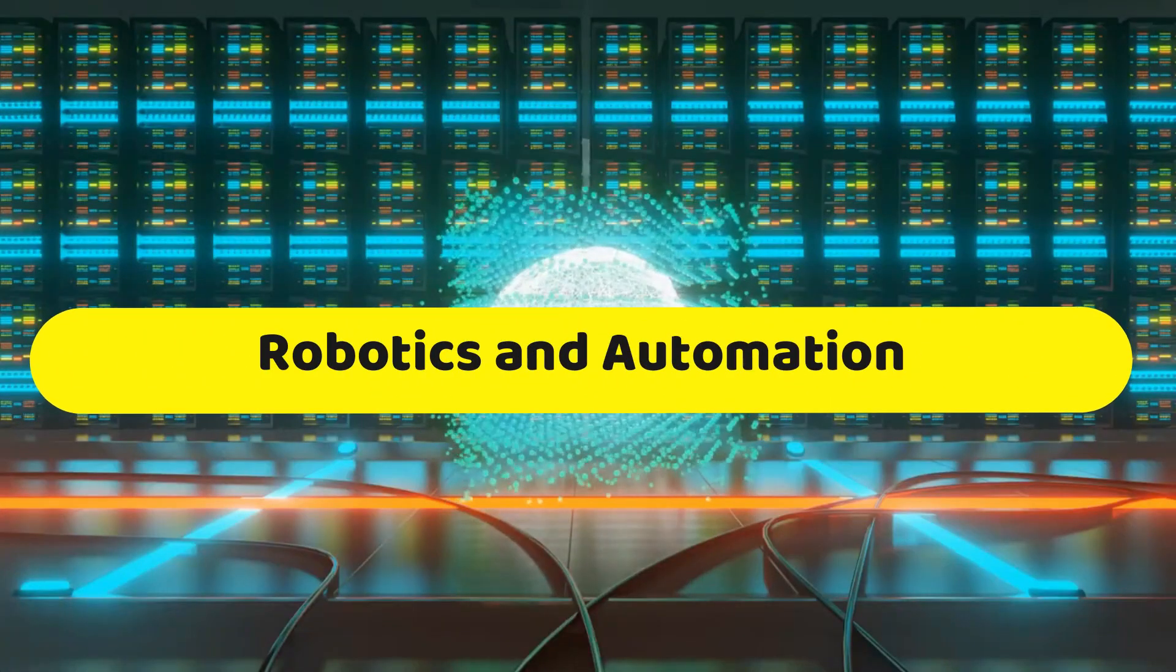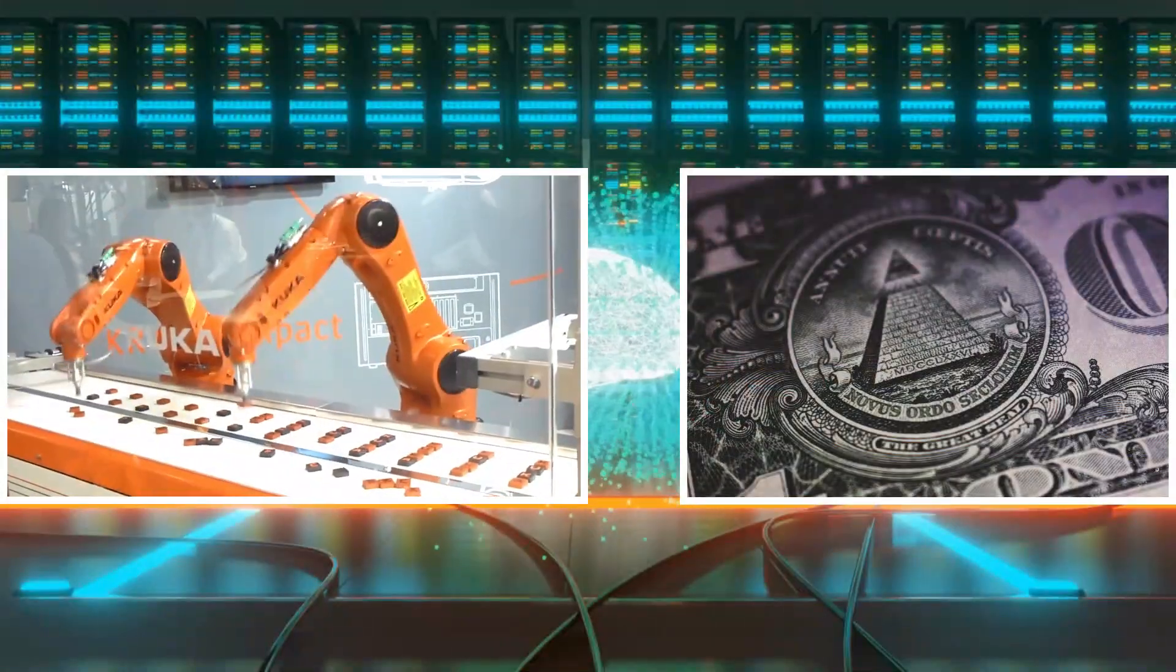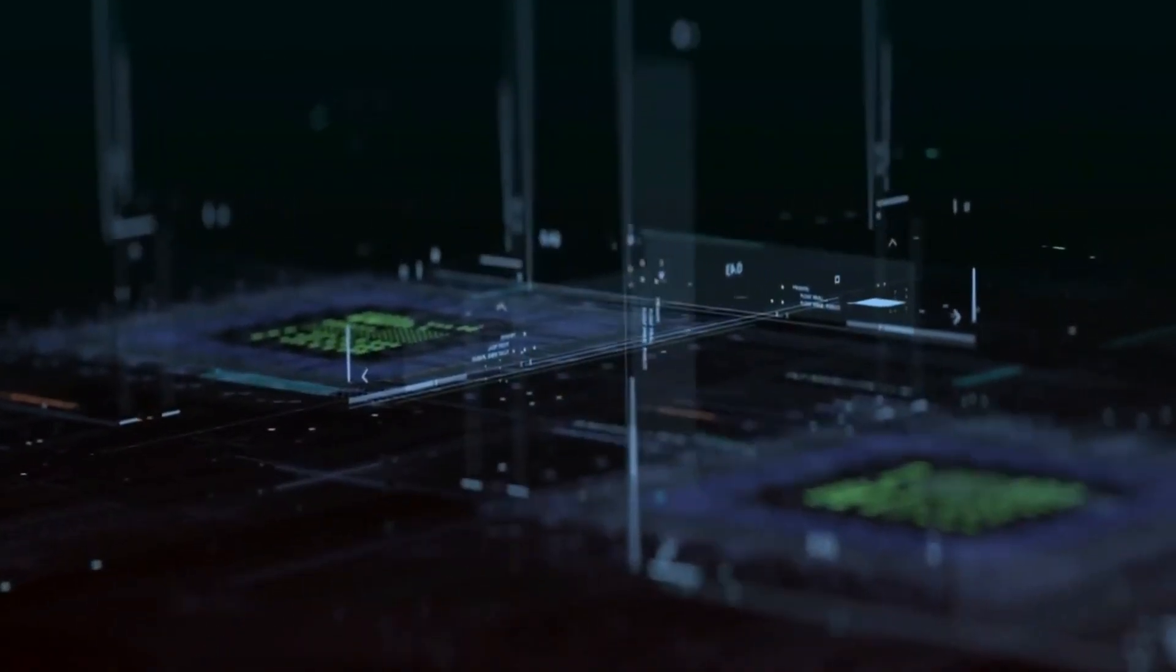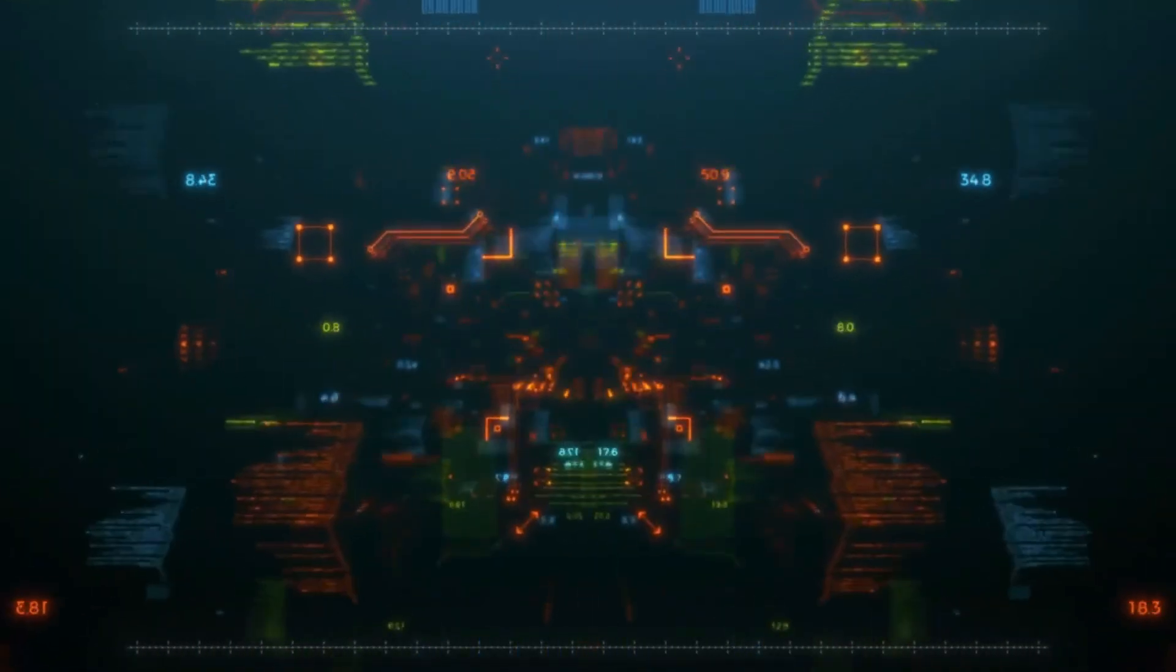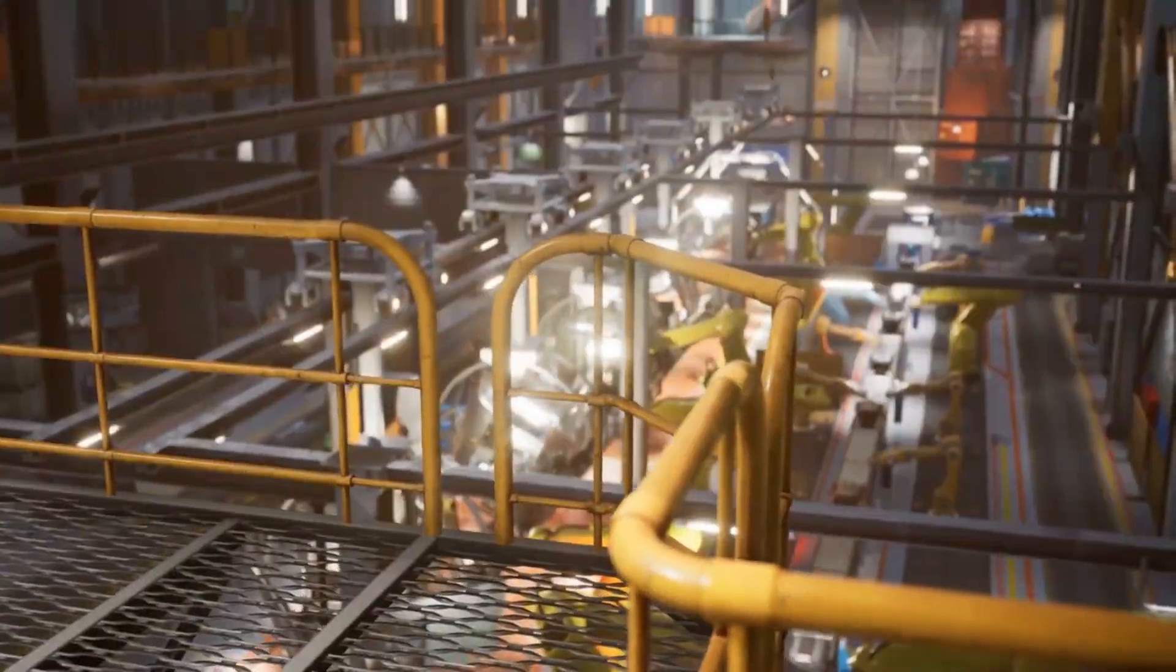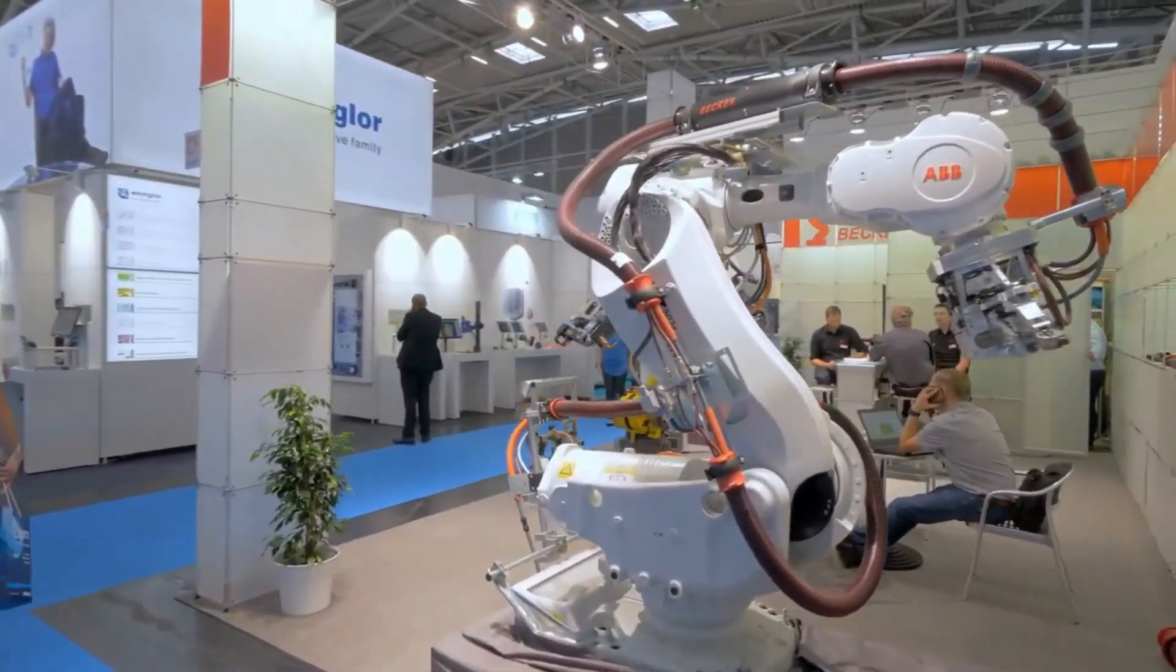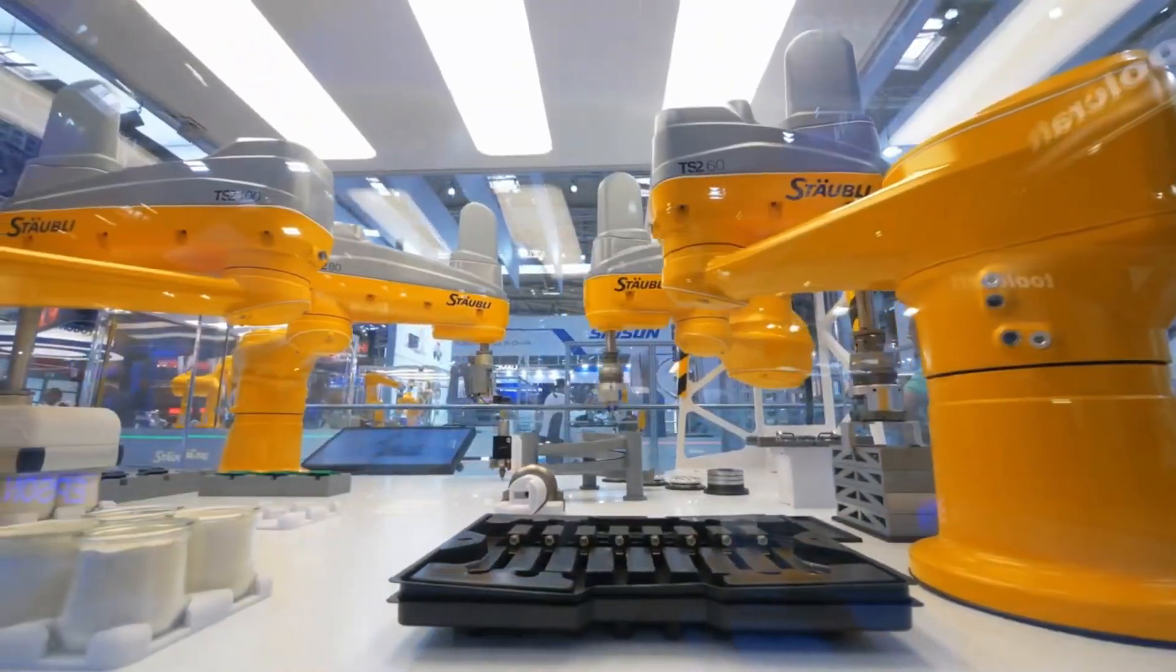Number 8: Robotics and Automation. Automation and robotics are fundamentally changing industries and economies all around the world. These innovations in artificial intelligence and machine learning are enabling previously unheard of levels of productivity, accuracy, and efficiency. Robots with sensors and AI algorithms are taking over dangerous and repetitive activities in manufacturing, maintaining consistency and quality, and lowering workplace accidents. Automation is transforming supply chains and logistics outside of the business, improving inventory control, and accelerating delivery with autonomous cars and drones.